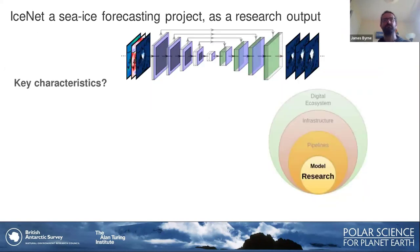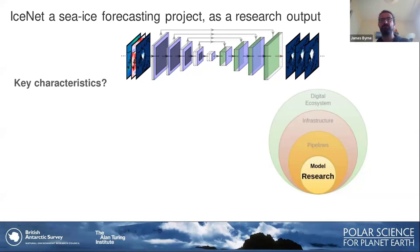ICENET is something I'm personally involved with heavily, and I use it as a case in point for why we take the approaches we do when thinking towards longer-term goals like digital twins. It started off as a research project — at the top you'll see a very deep convolutional network called the U-Net. We use that to process historical sea ice observations, atmospheric data, and other inputs to produce sea ice predictions.